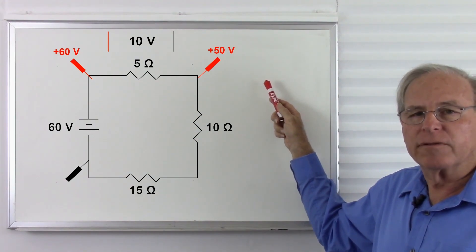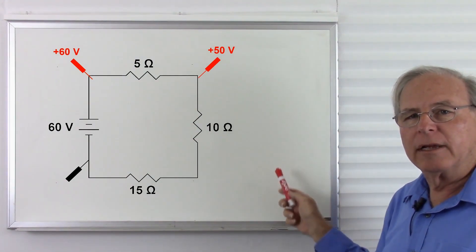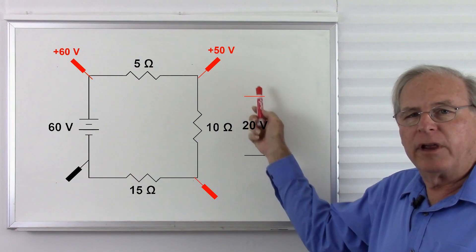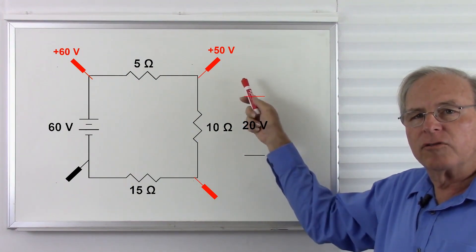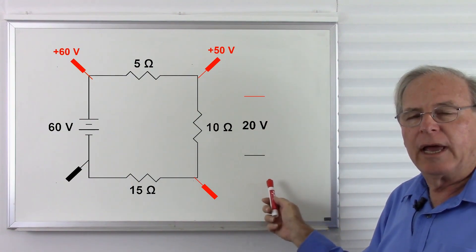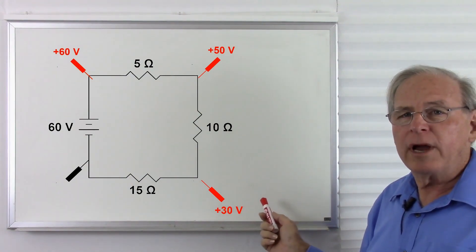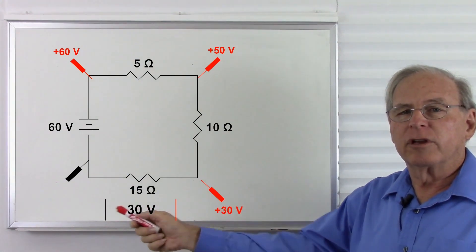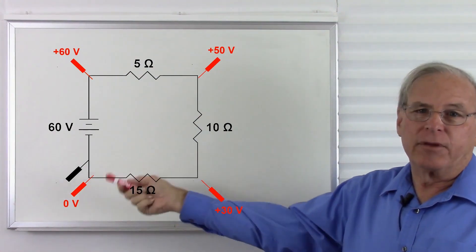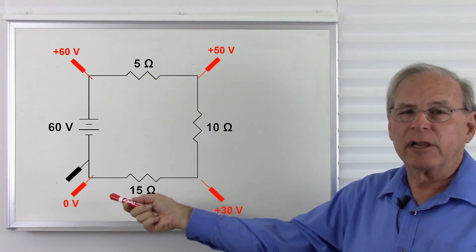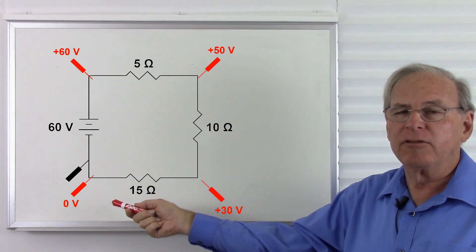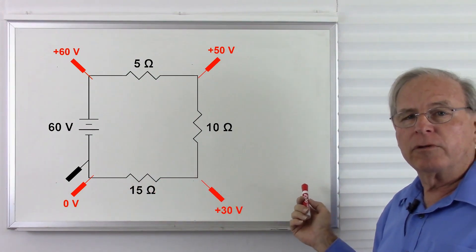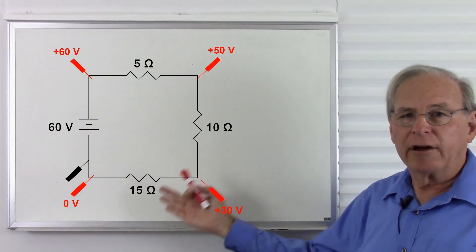Now let's move our red lead down across the 10 ohm resistor, which has 20 volts across it. We started with 50 here, we lose 20, and now we're down to 30 volts. Then we have positive 30 volts, we lose 30 volts across the 15 ohm resistor, leaving us with zero volts — or alternatively, the red lead is at the same place as the black lead, so the meter tells us zero, the difference in voltage between the two leads.